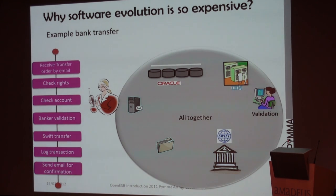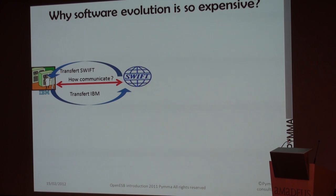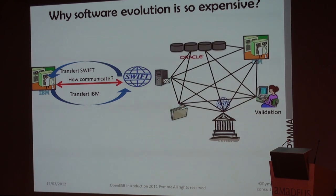Integration means that all components work together to execute this business process. You can think it's already complex, but in reality you have more partners and more technologies involved. Now, let's define how IBM and SWIFT work together — they exchange messages. The theory says that if you have n partners, you have n times (n minus 1) divided by 2 links. But in reality, statistics say that if you have n partners, you have around 2n links to manage.